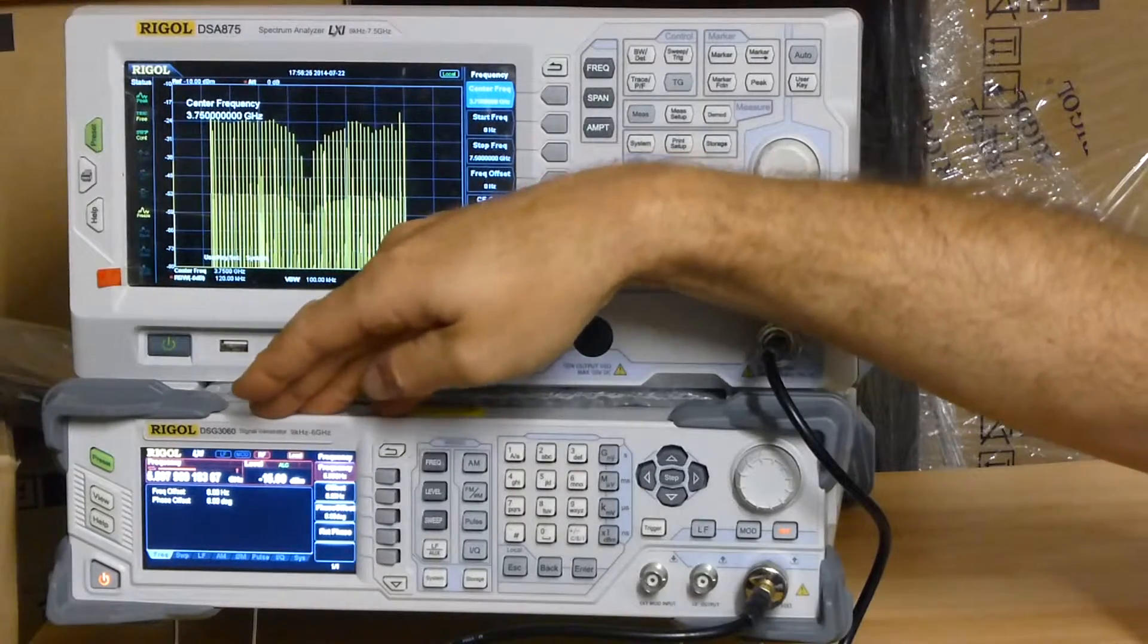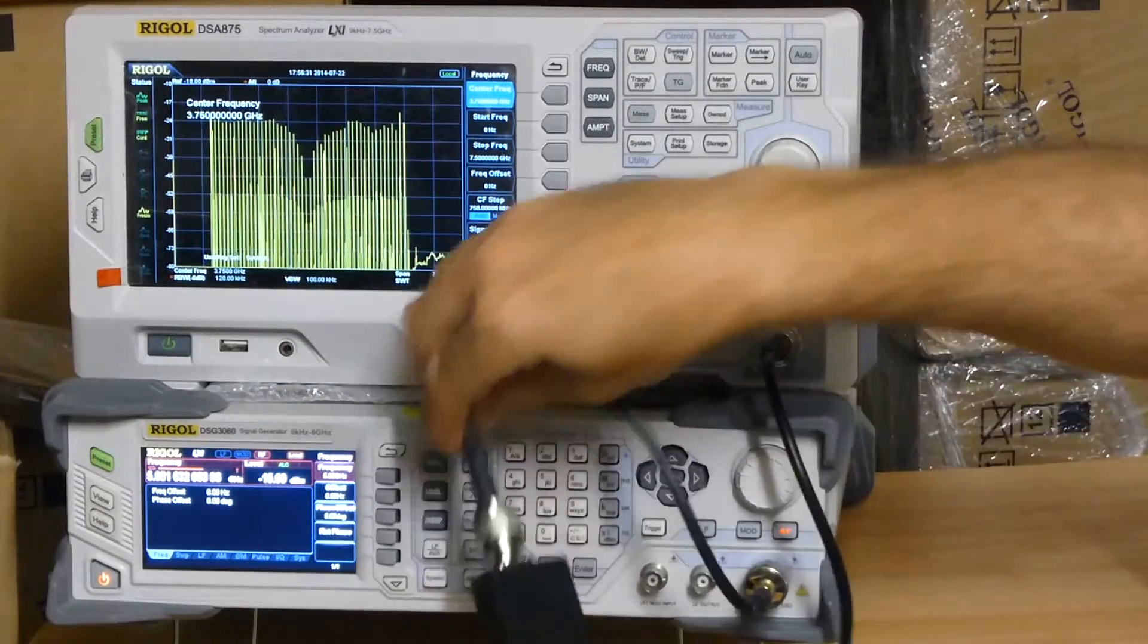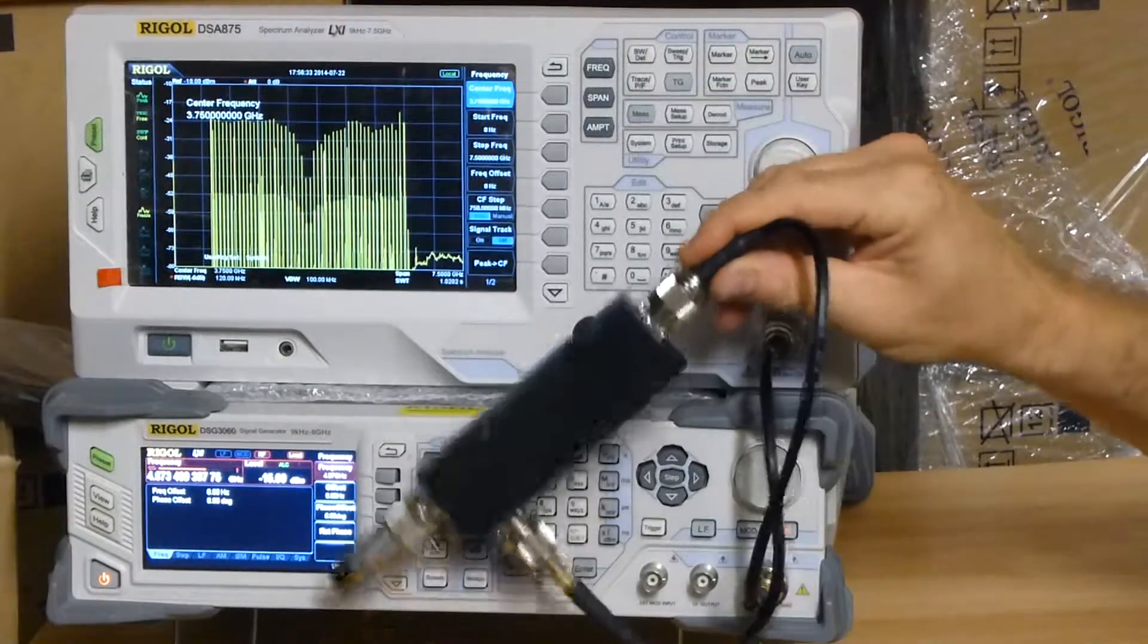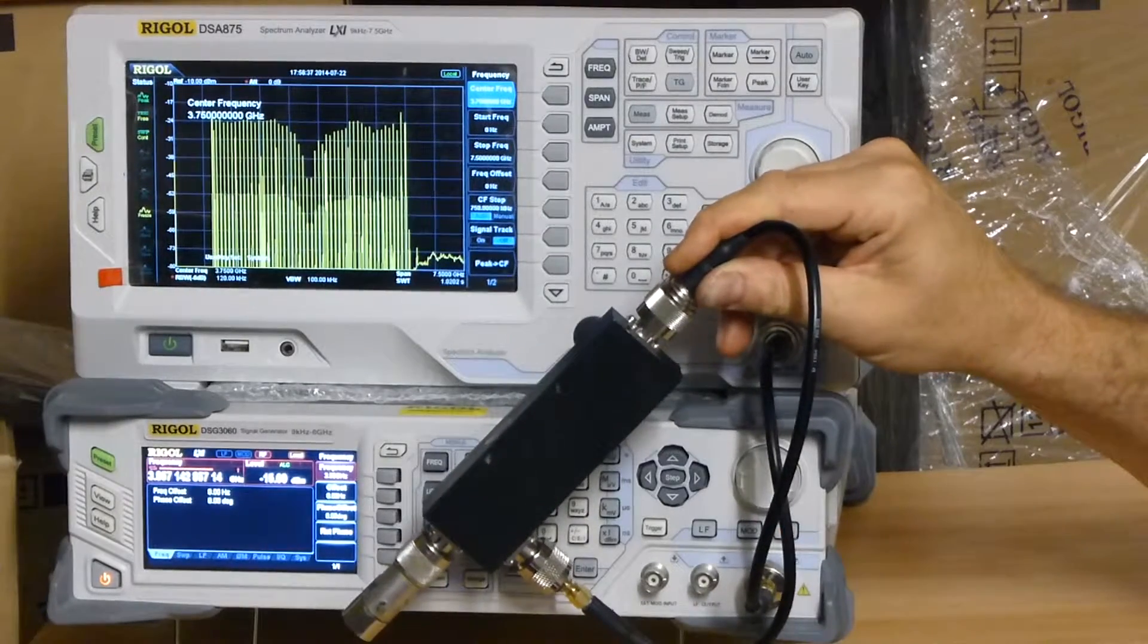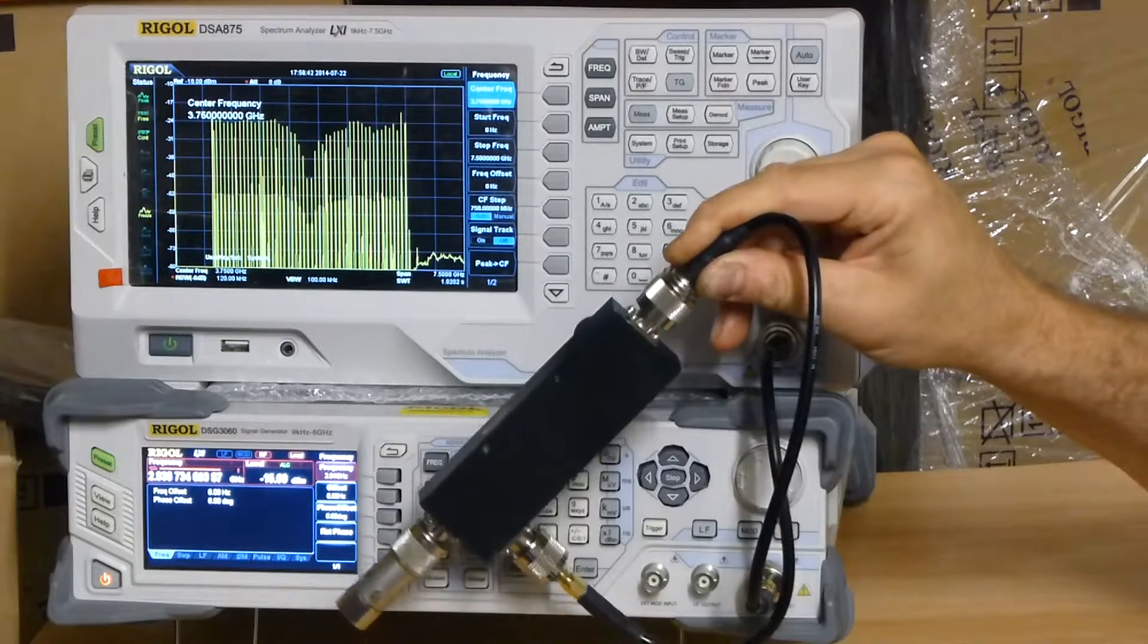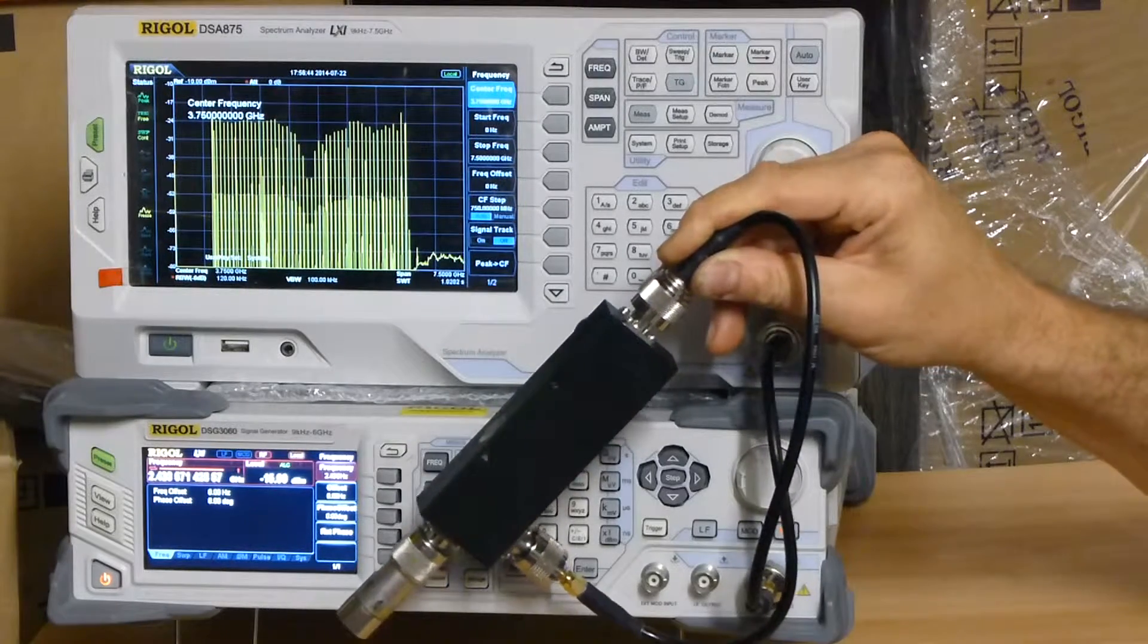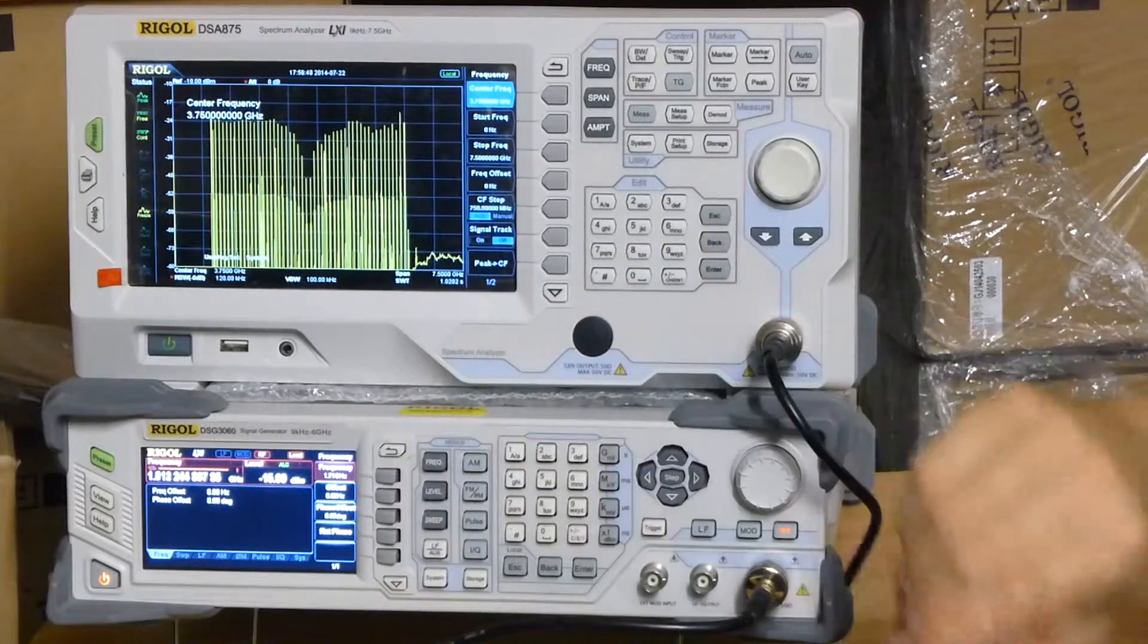I'm using it today as a sweep generator, and as you can see I've been testing a directional coupler. Normally for EMC you'd be testing using a LISN for conducted emissions or using some near-field probes which we also stock, or you'd be using an antenna of some sort. But today I just want to get a spectrum on the screen.